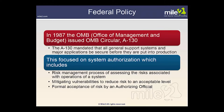With regard to federal policy, in 1987 the OMB — Office of Management and Budget — issued OMB Circular A-130, which mandated that all general support systems and major applications be secure before they're put into production. This focused on system authorization, including the risk management process of assessing risk, mitigating vulnerabilities to reduce risk to an acceptable level, and formal acceptance of this risk by an authorizing official.